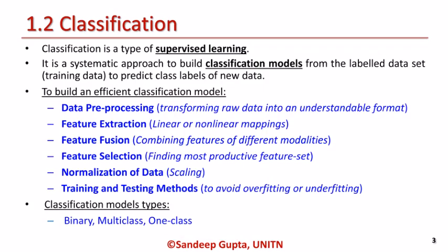Classification is a type of supervised learning. It is a systematic approach to build classification models from the labeled data set that we call training data, to predict class labels of new data. To build an efficient classification model, you need to process the training data.